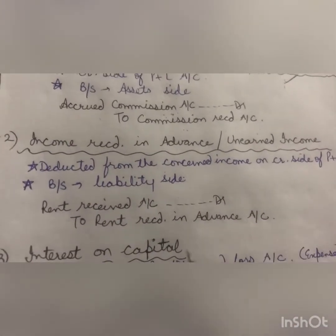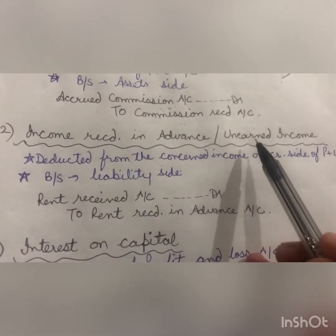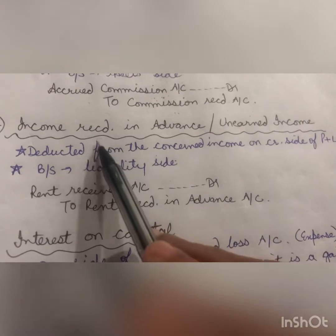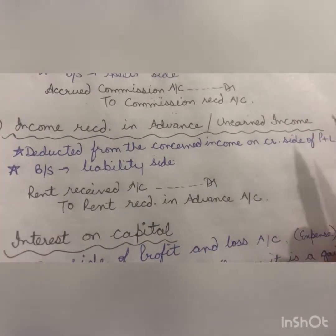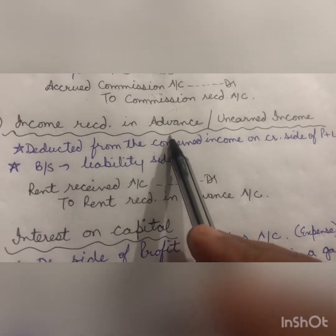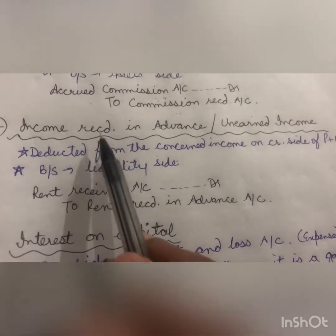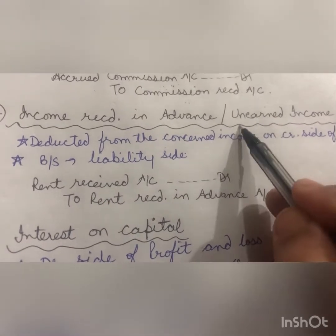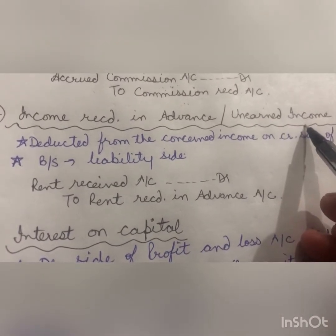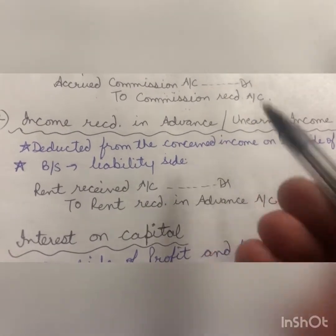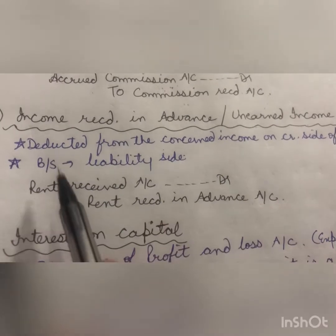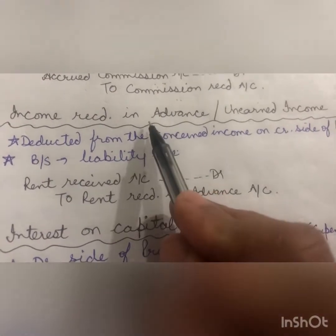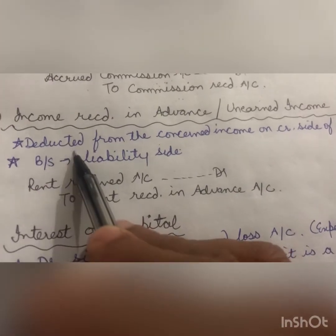The second adjustment is income received in advance, also called unearned income. This is income that is not of the current year but has been received in advance — meaning the income belonged to the next year but we received it this year. We have received it but not yet earned it. Because this income is not of the current year, we will deduct it from the concerned income account.